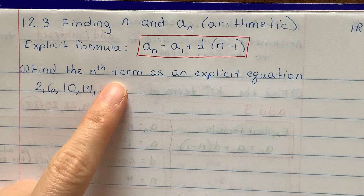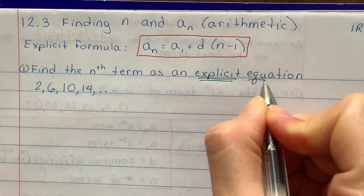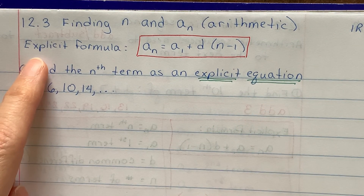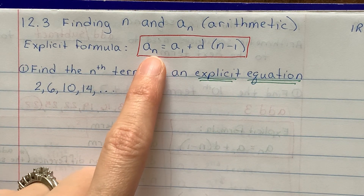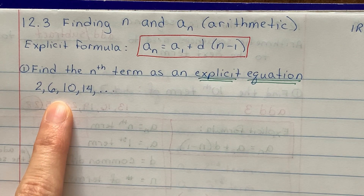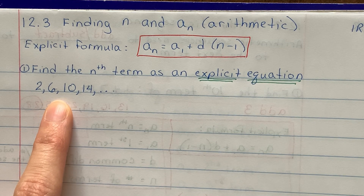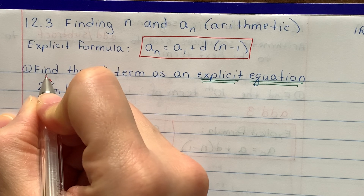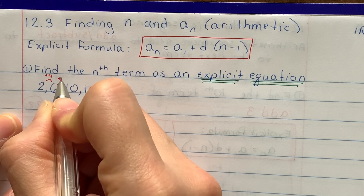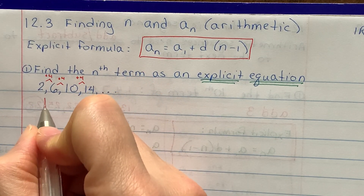Can you find the nth term as an explicit equation? The explicit formula is right up here, and they want me to come up with an explicit equation — that just means they want me to use this formula for this sequence of numbers. So the first thing I'm going to do is figure out the common difference. From 2 to 6, I'm adding 4. From 6 to 10, also adding 4. And from 10 to 14, also adding 4. So the common difference here is 4.